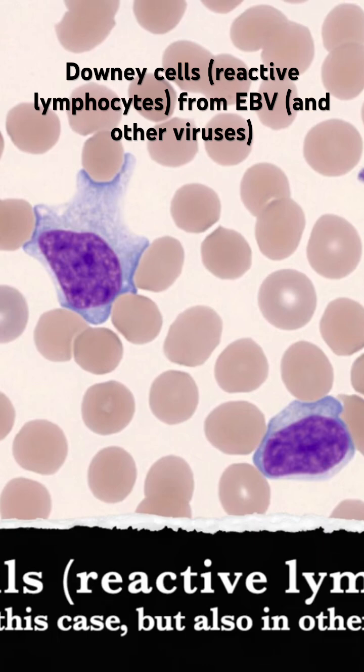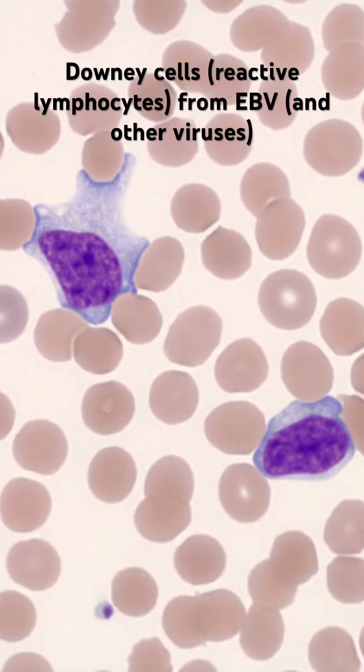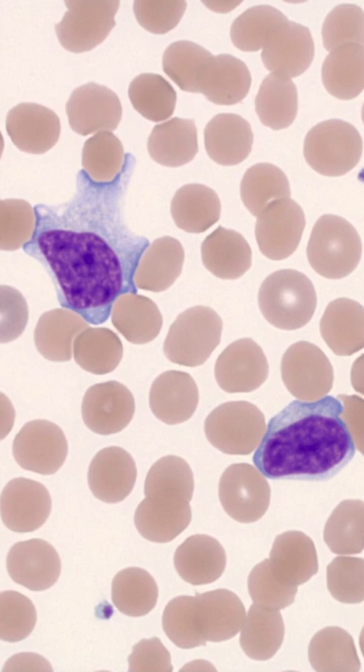You kind of got lucky and picked the exact virus. So the clinical scenario is important here: if you have bilateral leukocytes, lymphadenopathy, all of that in a teenager or young adult — that's mono, infectious mononucleosis. Not to be confused with monocytes.